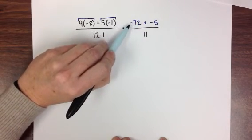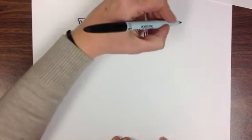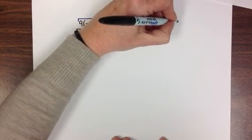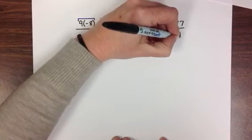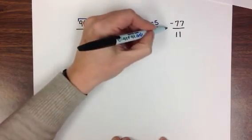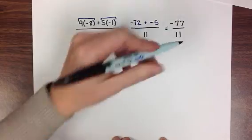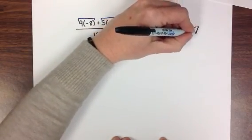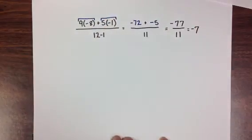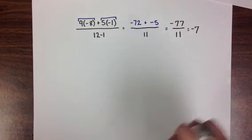To complete the top, negative 72 plus negative 5 gives me negative 77. When negative 77 is divided by positive 11, I'm left with negative 7. And that's the end of your review of order of operations with signed numbers.